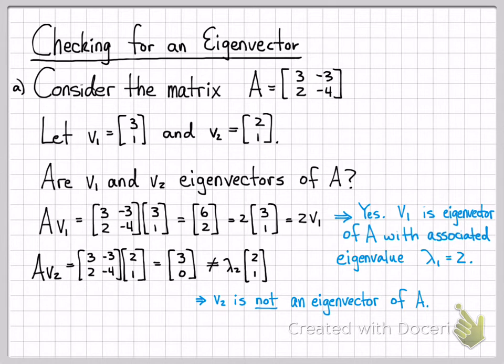So the vector v2 we conclude is definitely not an eigenvector of the matrix A. That's how we check for eigenvectors: if we have a matrix, if we have a vector, checking for them is pretty easy. Can I factor it like this? If I can, it's an eigenvector. Can I not factor it like this? If you can't factor it, then it is not an eigenvector.